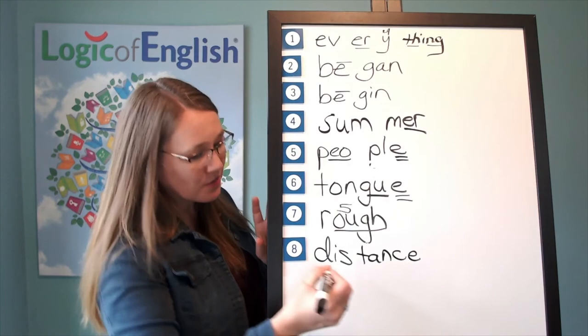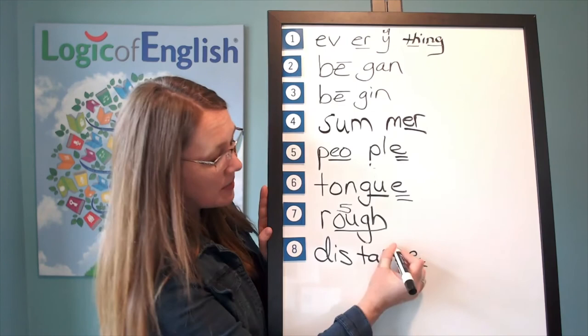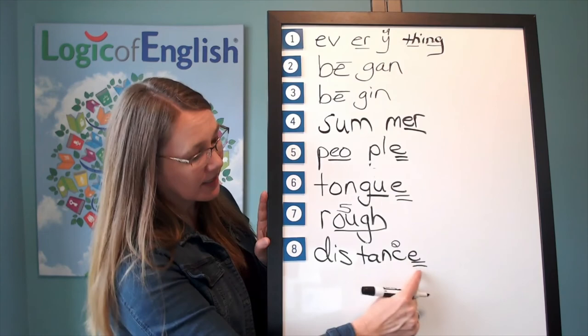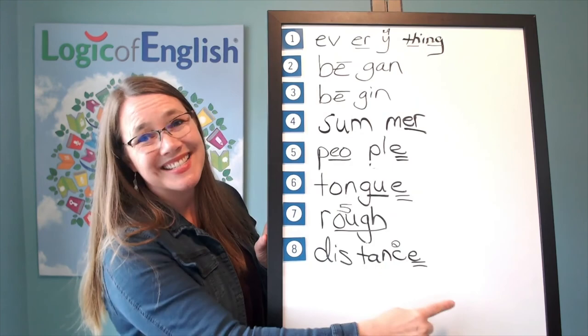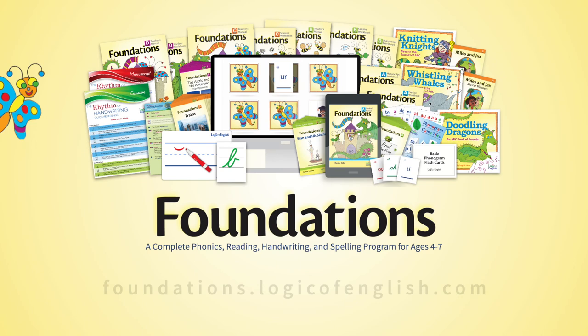And how will we mark it? You'll notice we have a silent final E in distance. Why? Because it made the C soft, say its soft sound. The C says its soft sound because of the E. Let's read it. D-I-S-t-a-n-s. Distance. Excellent. Great work today.